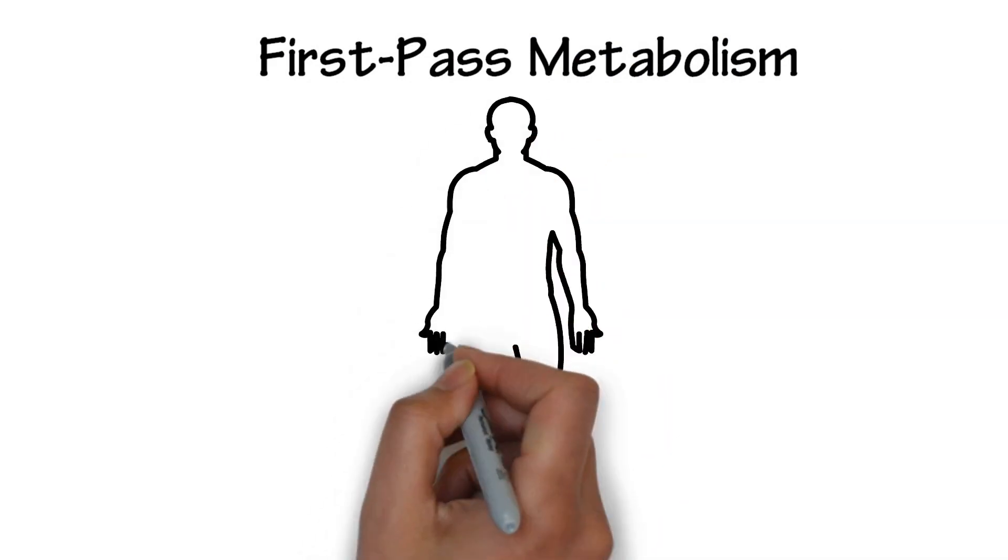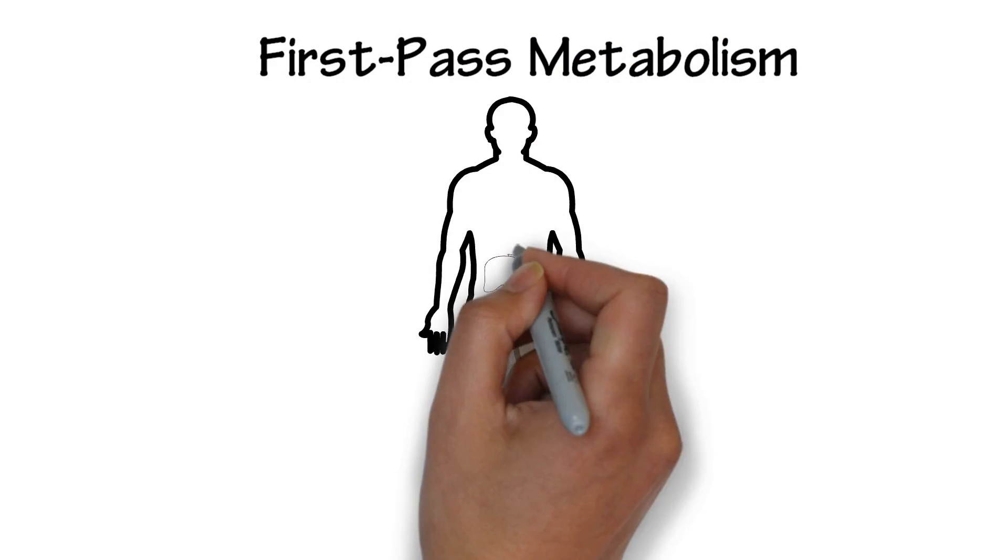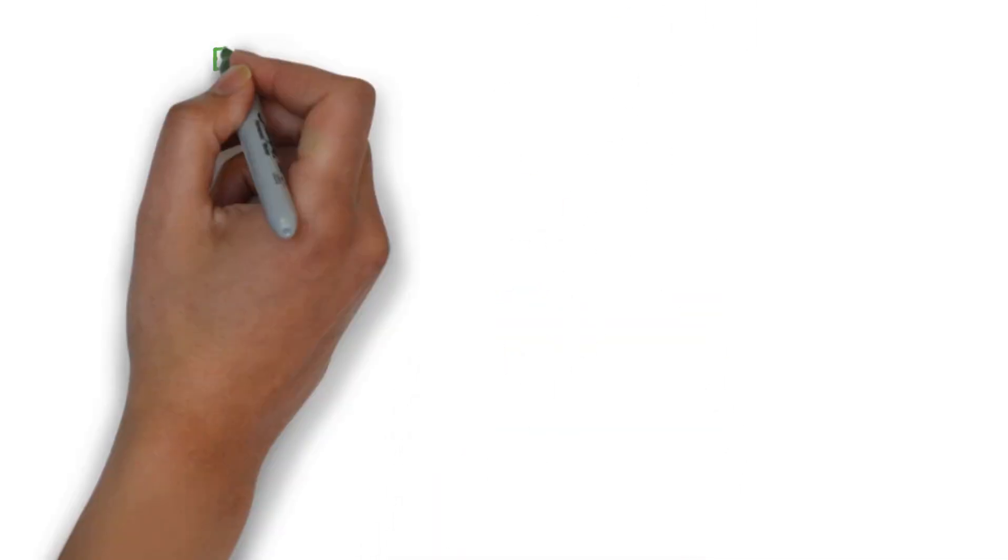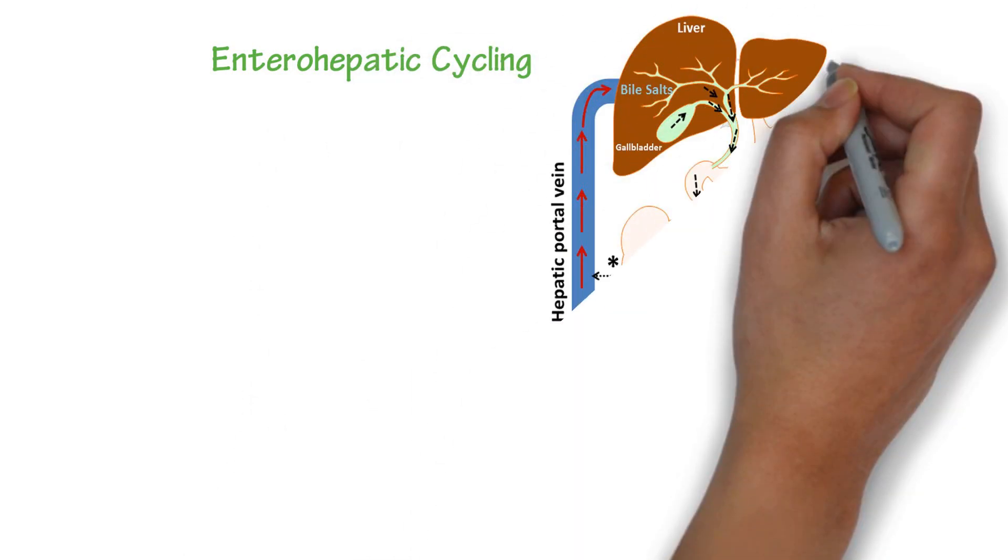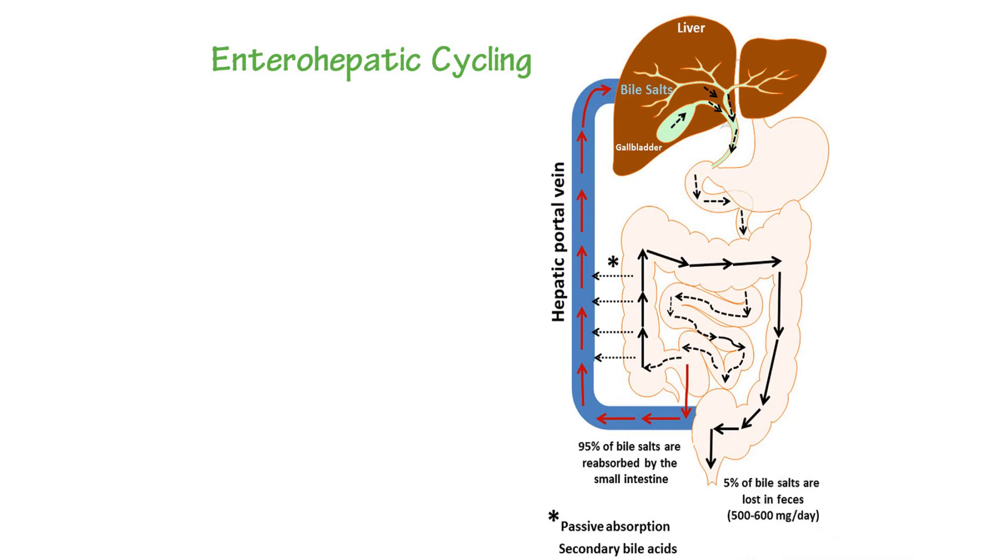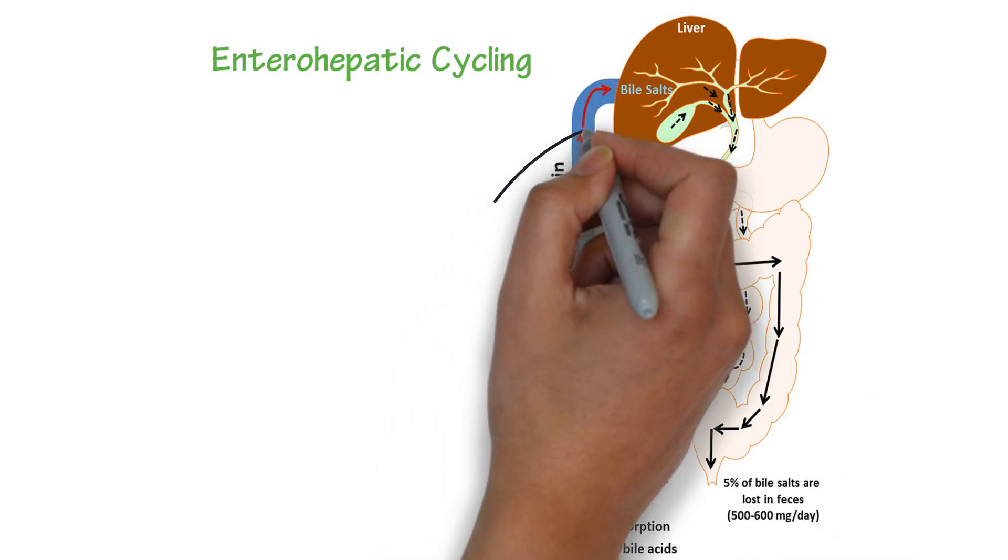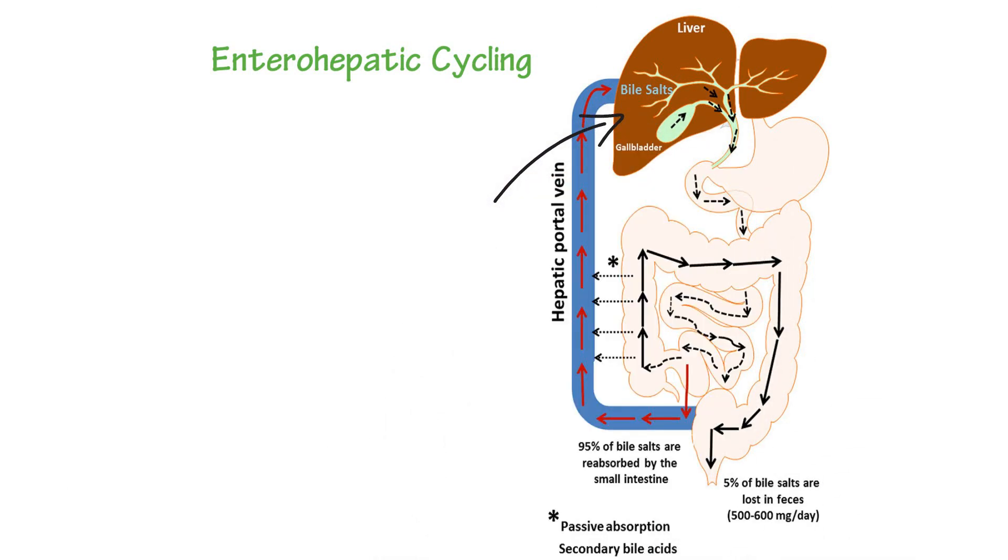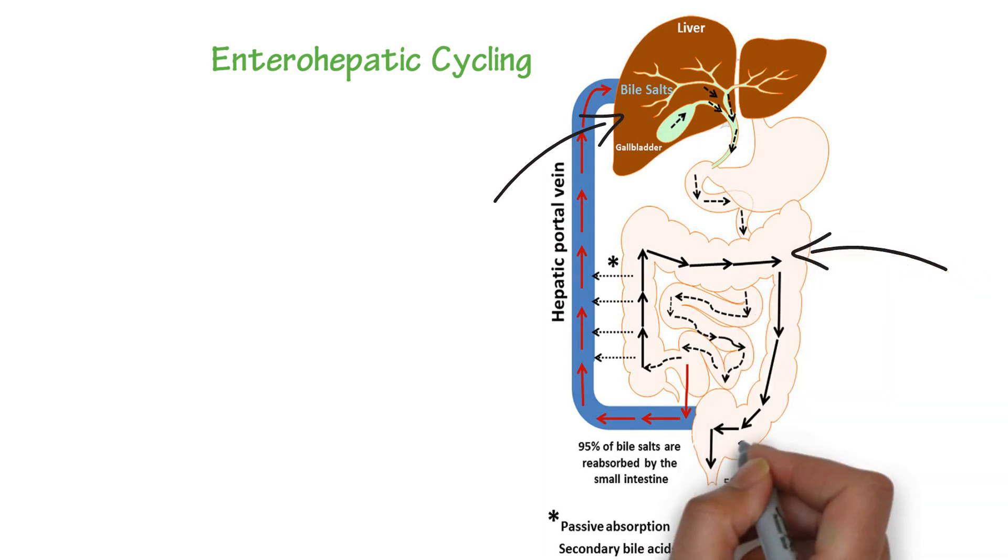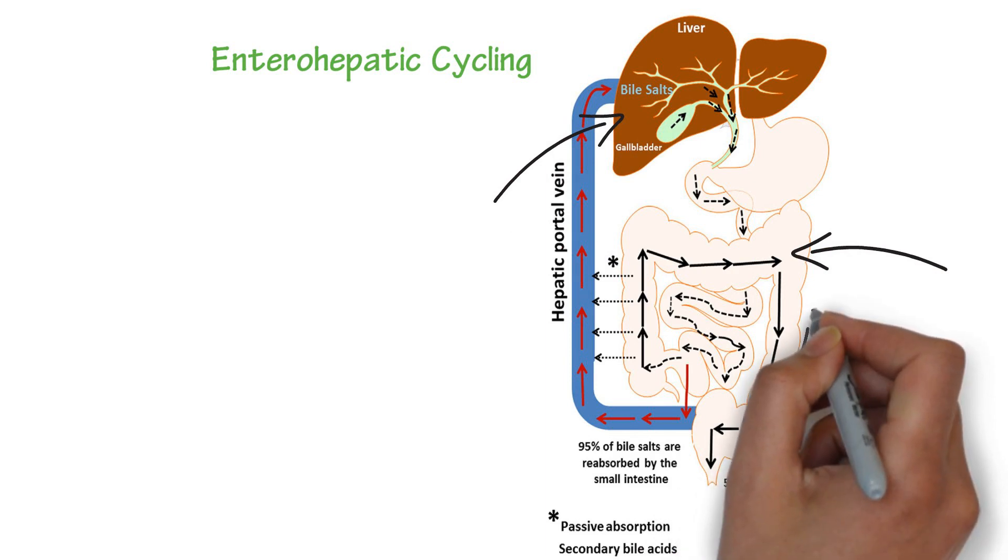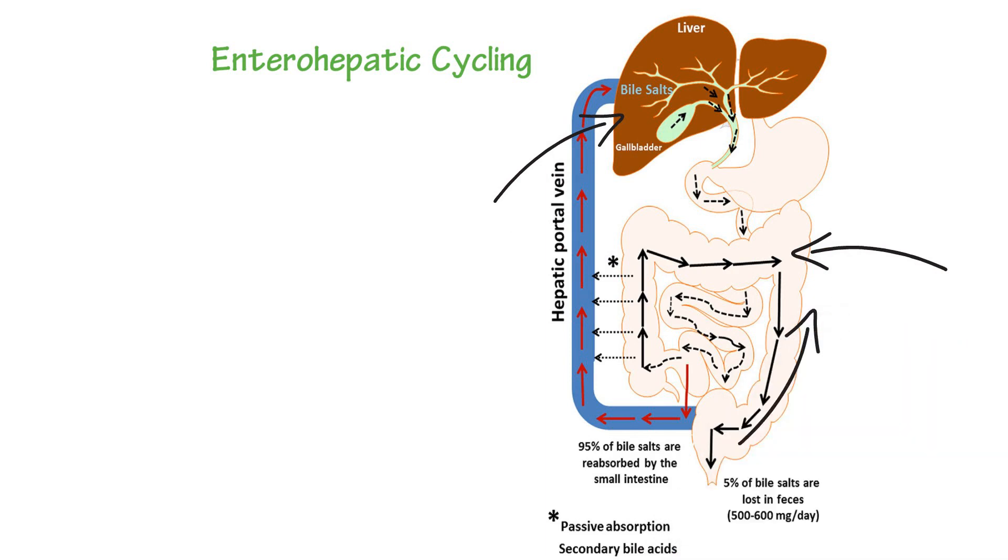First pass metabolism is the substantial degradation of an orally administered drug caused by enzyme metabolism in the liver before the drug reaches the systemic circulation. Enterohepatic cycling occurs when the liver may secrete drugs or metabolites into the bile that is stored in the gallbladder. The gallbladder empties the bile into the intestines. Drugs or metabolites in the bile may be reabsorbed or eliminated in excretion. If the drugs or metabolites are reabsorbed back into the blood circulation, this is called enterohepatic cycling.